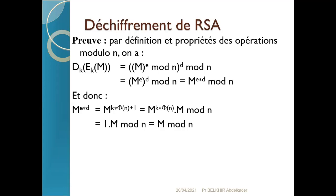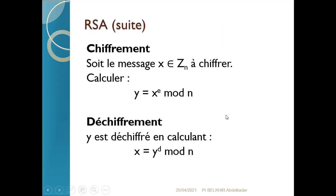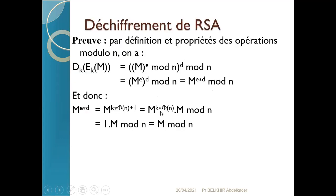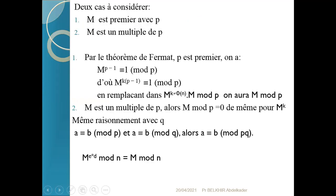Comment suis-je passé de M^(k×phi(N)) à 1 ? J'ai utilisé le théorème d'Euler. Cette propriété est valable à cette condition : il faudrait que M soit premier avec N. Je ne peux pas l'utiliser dans tous les cas. Ici j'ai utilisé M^(k×phi(N)) mod N = 1, ce qui nécessite que M soit premier avec N, sinon je n'aurais pas le droit de l'utiliser. On peut montrer que quel que soit le cas de M, on peut toujours avoir cette propriété.